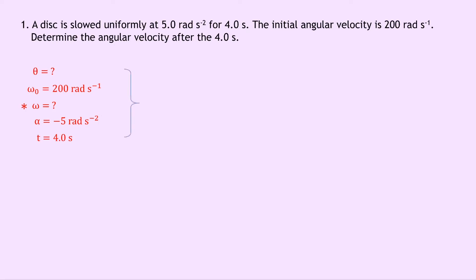So we're going to choose the equation of motion which does not have angular displacement theta in it. That's going to be: ω = ω₀ + αt. Substituting in our numbers, we have 200 plus minus 5 times 4.0, which gives us 180 radians per second.